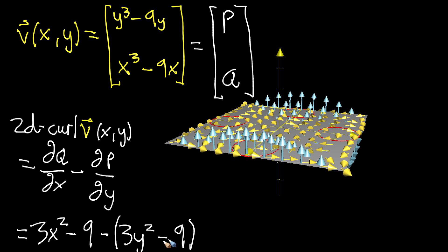And what you can do is you can say this minus 9 cancels out with that minus minus 9. So these guys cancel, and what you ultimately get is 3x squared plus 3y squared.